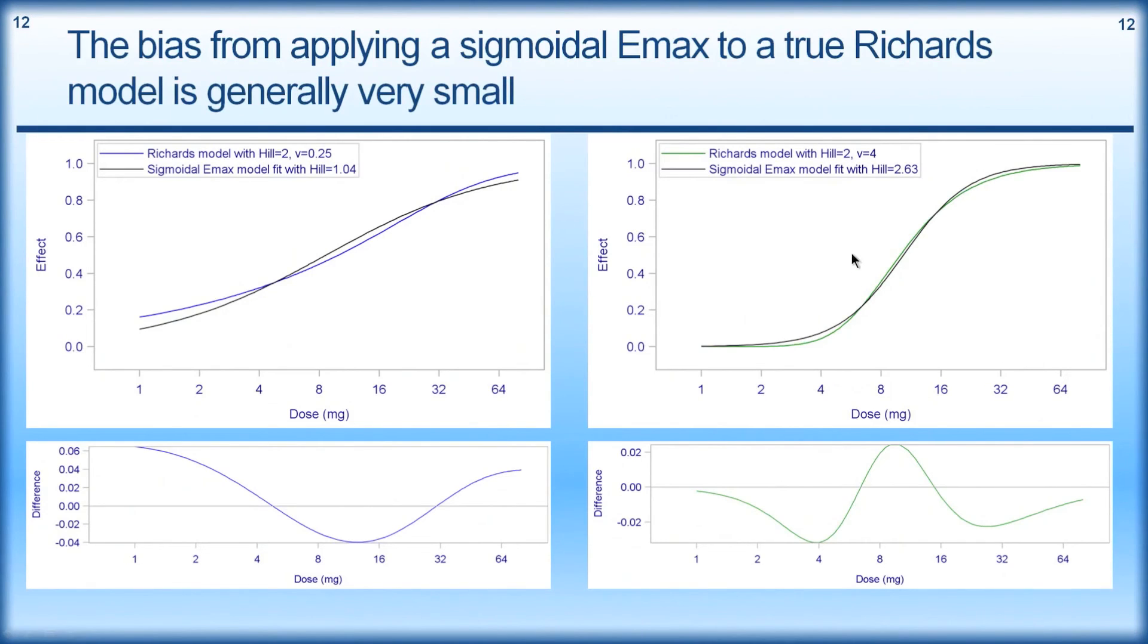The other side, when we have a slightly steeper-looking relationship with the V parameter equal to 4, now we're getting a sigmoidal Emax fit with a Hill of 2.63, even though the true model here is a Richards model with a Hill of 2 at V equals 4. And we see here that the lack of fit, again, is very small. It's only maybe 2% and 2% here. So it's doing actually a very good job of describing this curve. So really, when we apply a sigmoidal Emax model to a true Richards model, generally, the amount that we're going to be out is not too much.